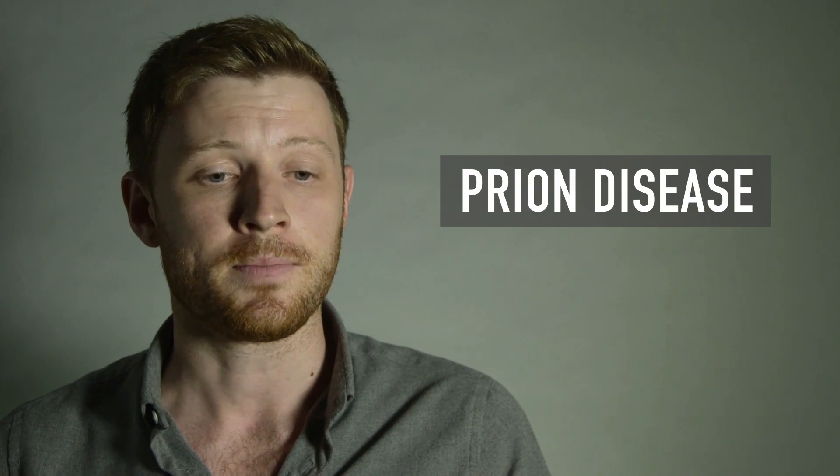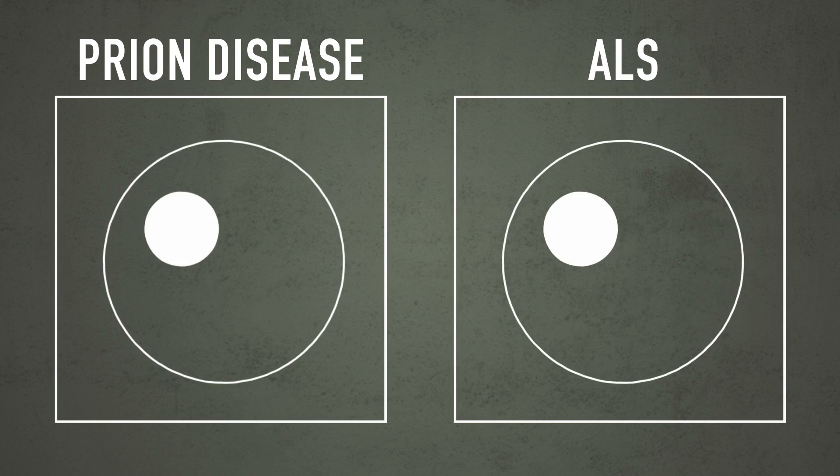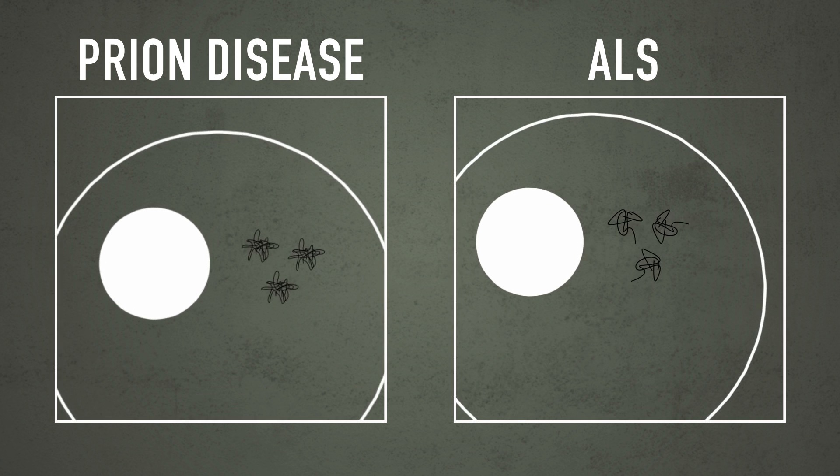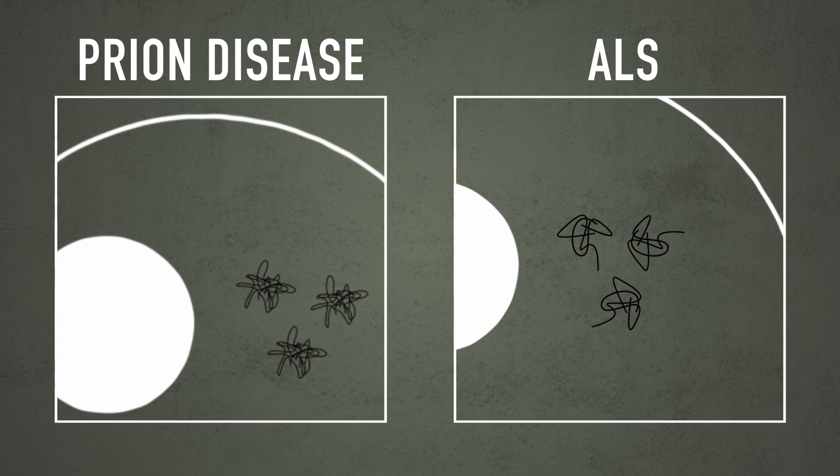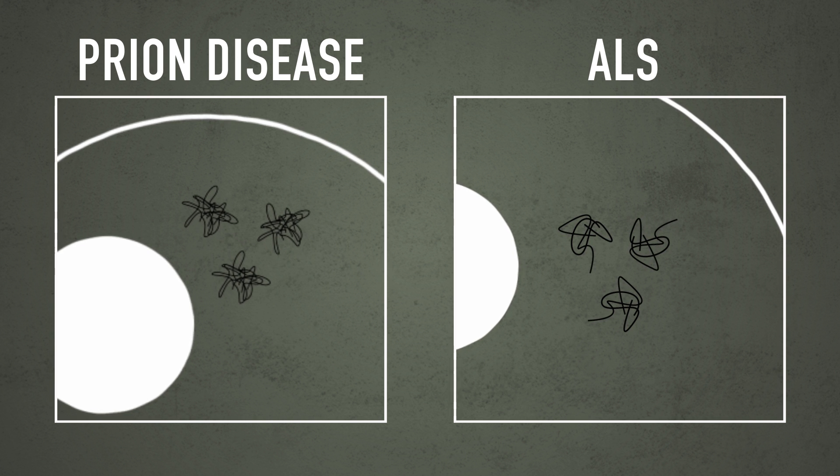To begin investigating how TDP-43 might be involved in the disease, we looked at another disease called prion disease. Prion disease gained notoriety in the 1980s and 90s for the mad cow disease epidemic. It's well known for having clumps of prion protein deposited in the brains of patients. That's one key feature we already see with ALS.